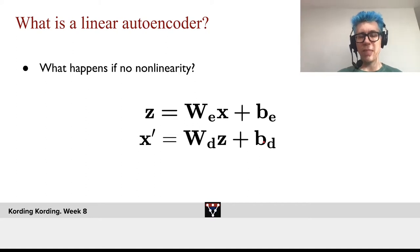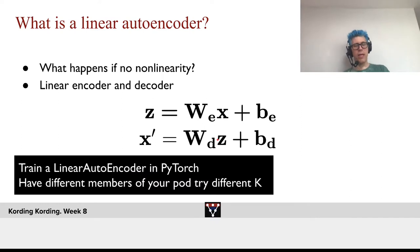What happens if we have no non-linearity? We have the linear encoder and the linear decoder. Now it's your turn to train a linear autoencoder in PyTorch and have different members of your pod try different K, where K is the dimensionality of the code. Let's compare what that does to the results.